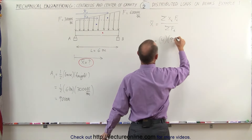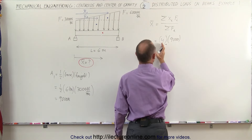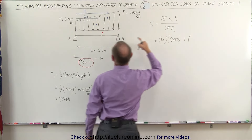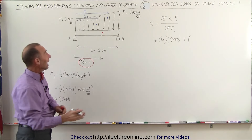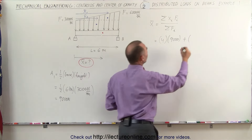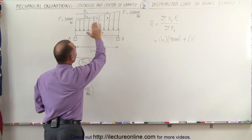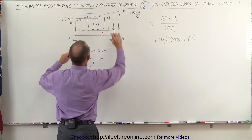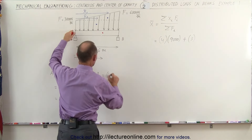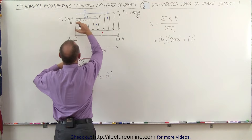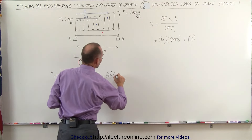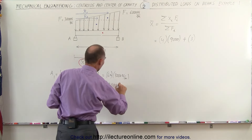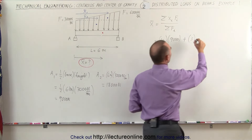So we have 4 meters times 9,000 newtons for the triangular portion. We add to that the centroid of the rectangular portion, which is exactly at the halfway point between A and B — that's three meters — multiplied by the total force of the rectangular portion. Area 2 equals the width of six meters times the height of 3,000 N/m, which equals 18,000 newtons. That's the total force represented by the rectangular portion.